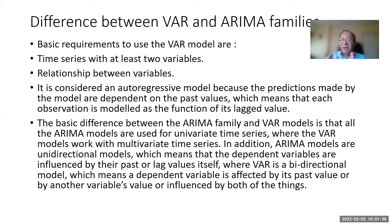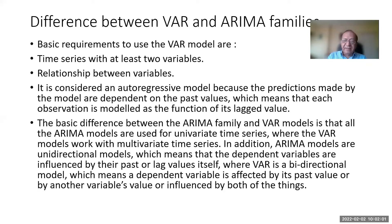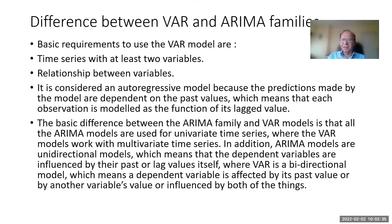ARIMA models are unidirectional, meaning dependent variables are influenced by their own past or lagged values. VAR is a bidirectional model, meaning a dependent variable is affected by its past value and by another variable. For instance, quantity is a function of price, but price can also be a function of demand — just like simultaneous equations. So in that case, we use VAR. ARIMA is for univariate time series; VAR is the bidirectional model.